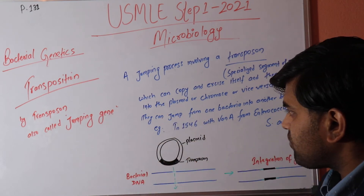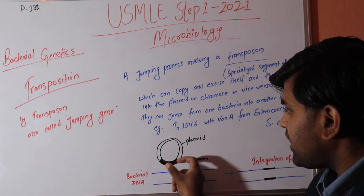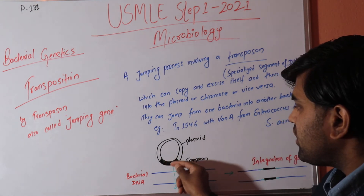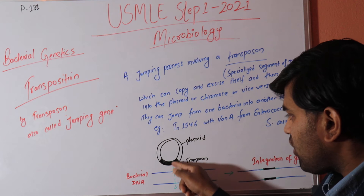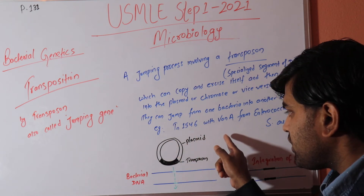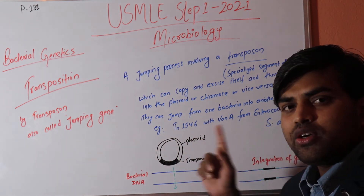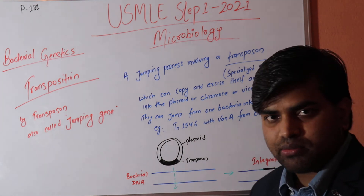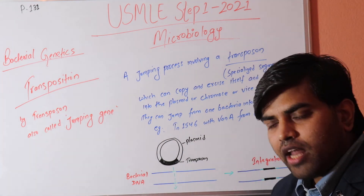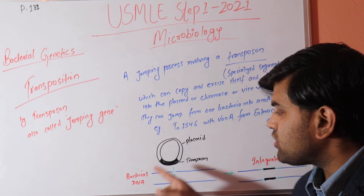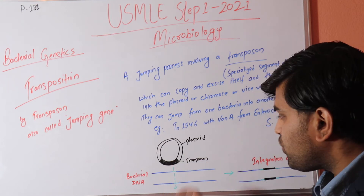To make it simple: a transposon is a special segment of DNA that can jump from one part of a plasmid to another, from the plasmid to the bacterial chromosome DNA, or from one bacterial chromosome to another. They can jump within the bacterial cell and between cells, which is why they are known as jumping genes.